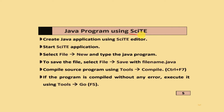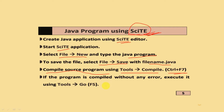In the 12th standard, we use a text editor called Scite. A video on how to download this Scite text editor has already been created, so you can refer to that video to download it. To create Java applications using Scite: go to File > New, type the Java program, and save it with the extension .java. To compile the source program, go to Tools > Compile - the shortcut key is Ctrl+F7. If the program compiles without any error, execute it using Tools > Go, or the shortcut key F5.